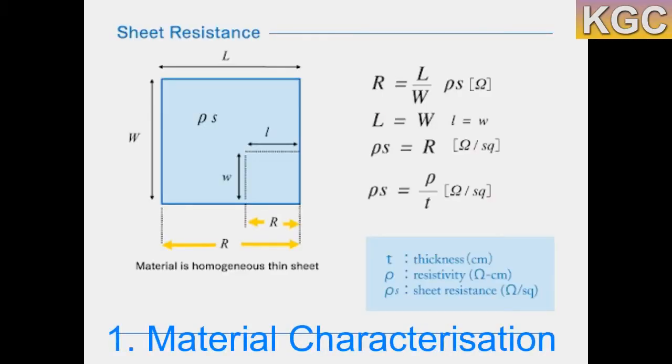Material characterization. Resistivity is an inherent characteristic of a material and an important electrical property. It can be determined by measuring the sheet resistance of a thin film with a known thickness, making the 4-point probe measurement a key technique for the electrical characterization of materials.